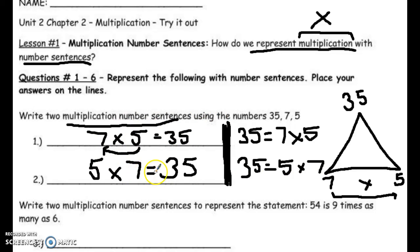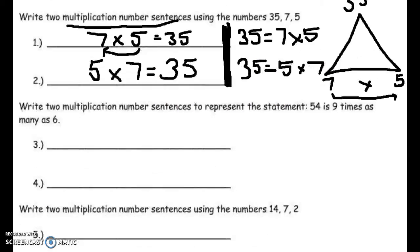7 times 5 is 35. 5 times 7 is 35. Or 35 is 7 times 5. 35 is 5 times 7. Using fact families or your knowledge of the commutative property of multiplication will help you create multiplication number sentences.